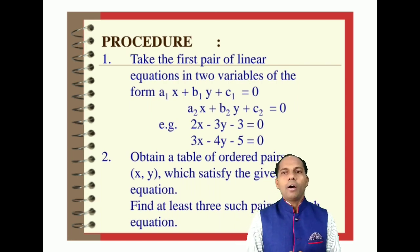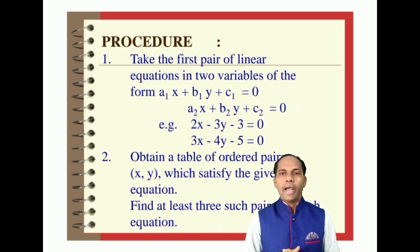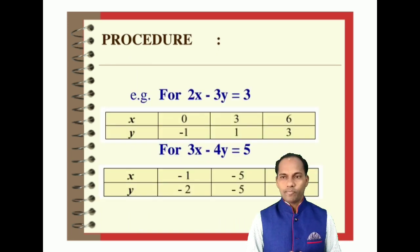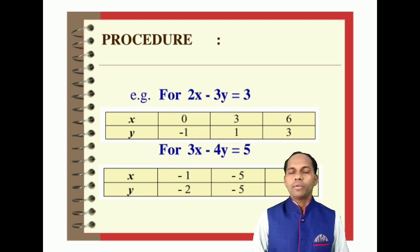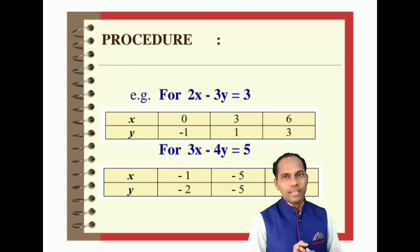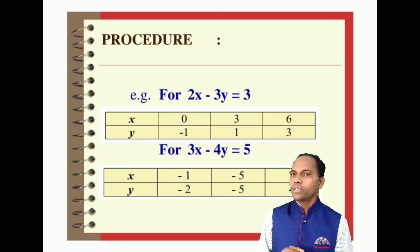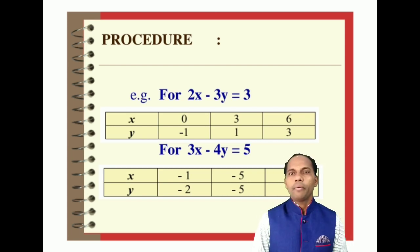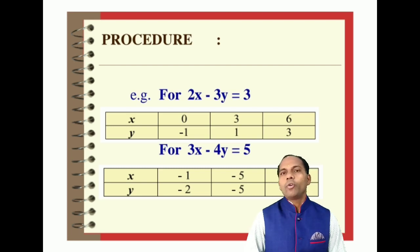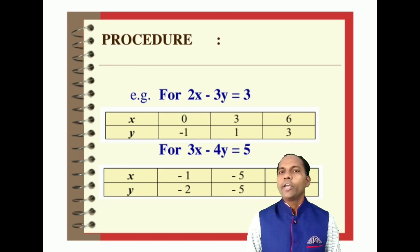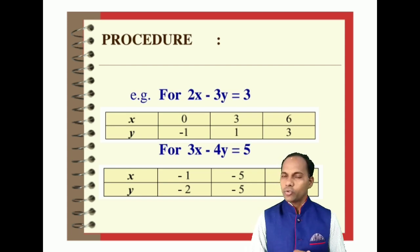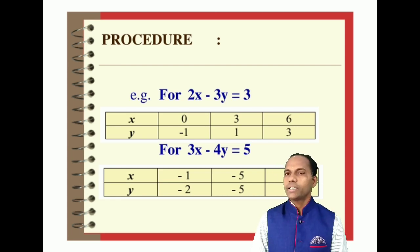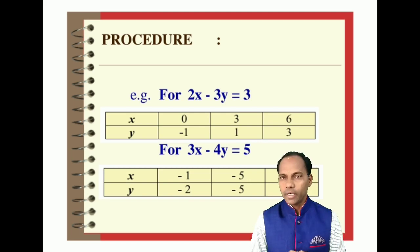Obtain a table of ordered pairs which satisfy the given equation, and find at least three such pairs for each equation. For the first equation, 2x - 3y = 3, you find y = (2x - 3) / 3. Putting in values of x, we get three ordered pairs: (0, -1), (3, 1), and (6, 3).